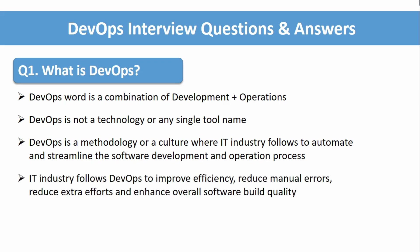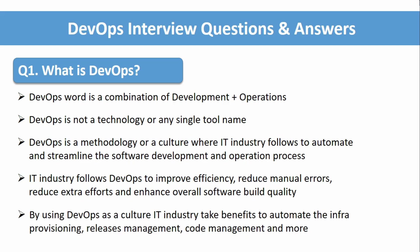The IT industry follows DevOps to improve efficiency, reduce human or manual errors, reduce extra efforts, and enhance overall software build quality. For these benefits, companies are using DevOps as a model in their projects. By using DevOps as a culture in the IT industry, organizations gain benefits in automating infrastructure provisioning, release management, code management, automation testing, and other steps.